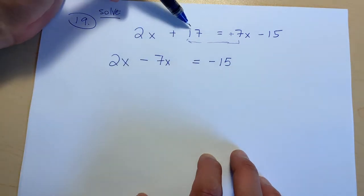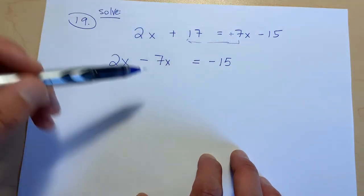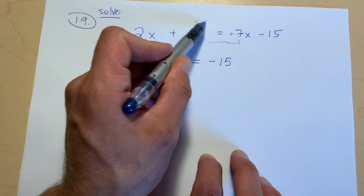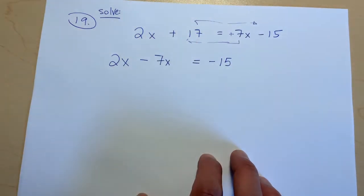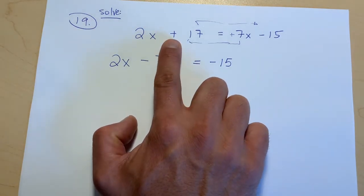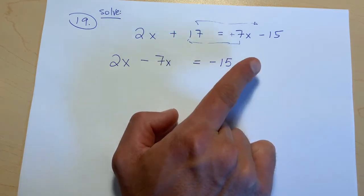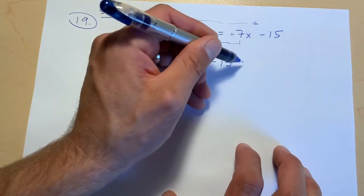And then this 17, I want to bring over here to join up with the other numbers. So when we bring this 17 over the equal sign, it's going to flip. Right in front of it is a plus or positive, that means that when we bring it over the equal sign, it's going to become negative. Oh boy.